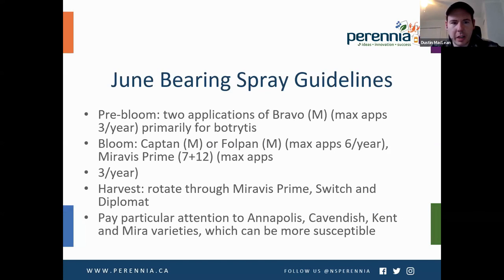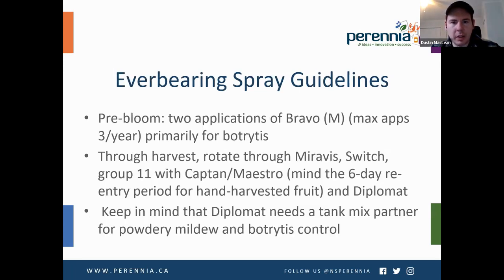For June-bearing spray guidelines: pre-bloom, two applications of Bravo — maximum three applications per year — which is primarily for Botrytis. At bloom, Captain or Folpan, Miravis Prime. At harvest, rotate through Miravis Prime, Switch, and Diplomat. Pay particular attention to Annapolis, Cavendish, Kent, and Myra varieties, which could be more susceptible. For ever-bearing: two applications of Bravo pre-bloom, then through harvest rotate through Miravis, Switch, and the group 11 with Captain Maestro and Diplomat. Keep in mind that Diplomat needs a tank mix partner for powdery mildew and Botrytis control.